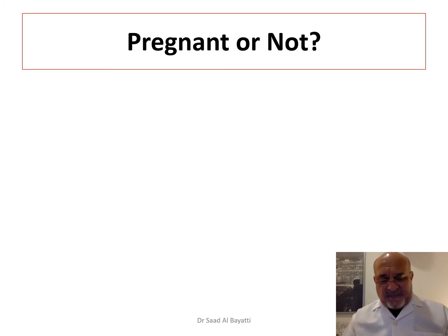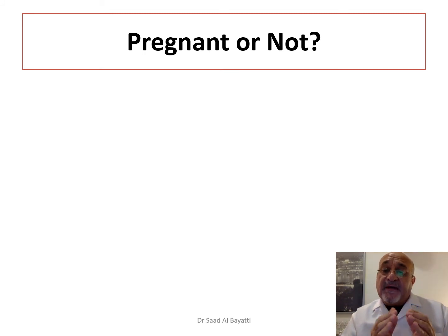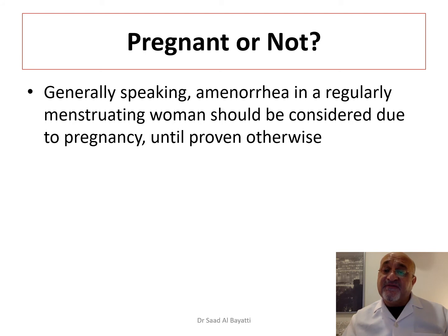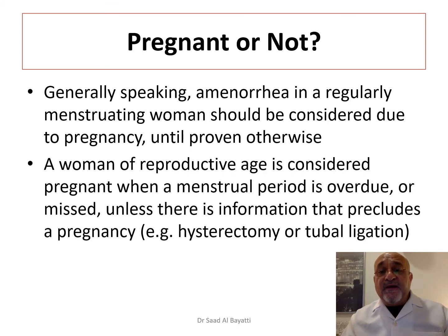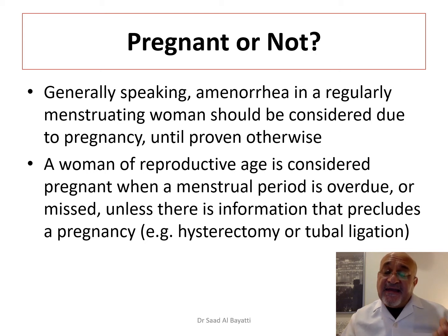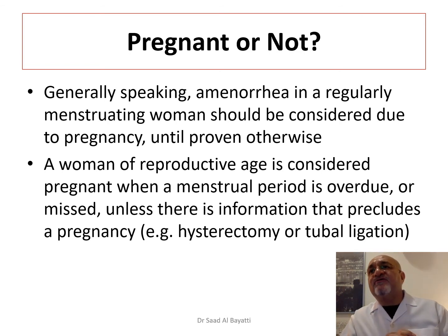Before we proceed, we have to make sure whether the lady is actually pregnant or not. By definition, physiologically speaking, amenorrhea in a regularly menstruating woman should be considered caused by pregnancy unless proven otherwise. A woman of reproductive age is considered pregnant when the menstrual period is overdue or missed, unless there is information that precludes pregnancy, such as tubal ligation or hysterectomy.